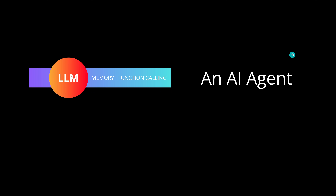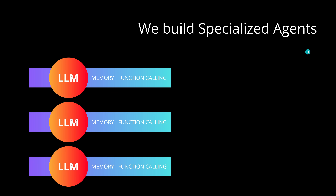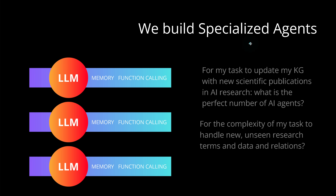So what do we do? We build an agent, of course. It's February 2025 — hello agents! We have an AI agent, which means we have an LLM, not just rule-based. We have memory and function calling, everything we need. And then we build specialized agents — multiple agents, of course. Multi-agent systems are easy to learn.